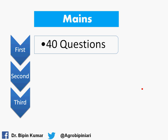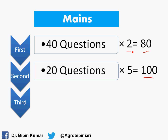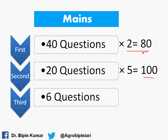Section one has three questions, each carrying two marks, with a total weightage of 80 marks. Section two has 20 questions, each carrying five marks, with a total weightage of 100 marks. These two sections are very important because marks are awarded mathematically — you have a chance to secure more than 90%, and if you attempt all 40 questions carefully, you can realistically secure 80 to 90%. Section three has six long questions, each carrying 10 marks, with a total weightage of 60 marks.